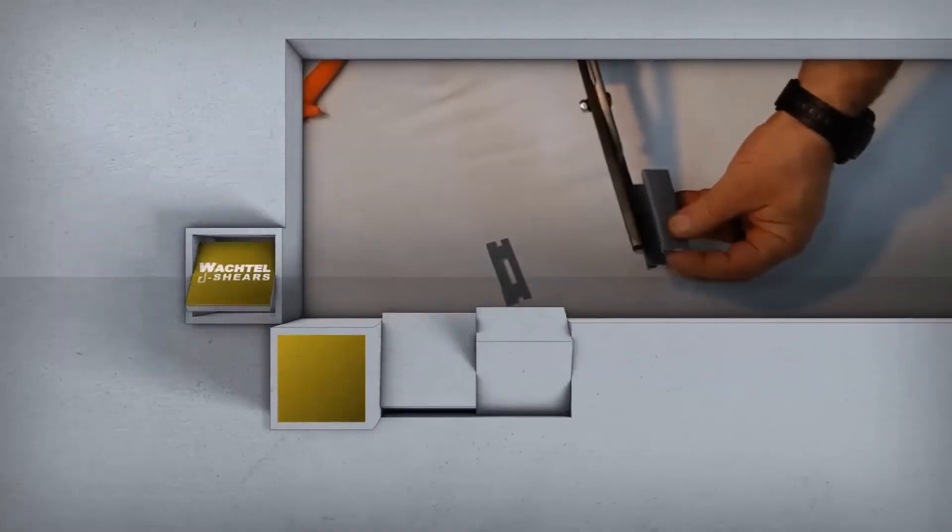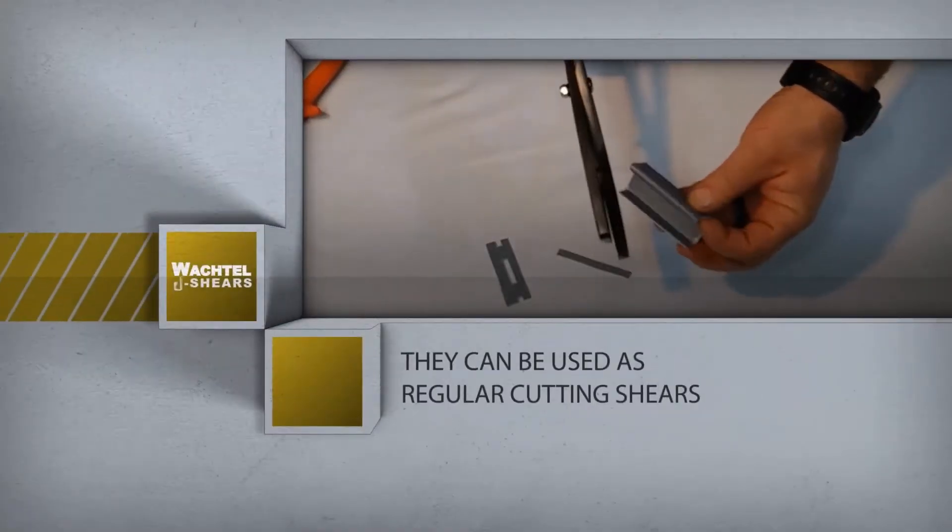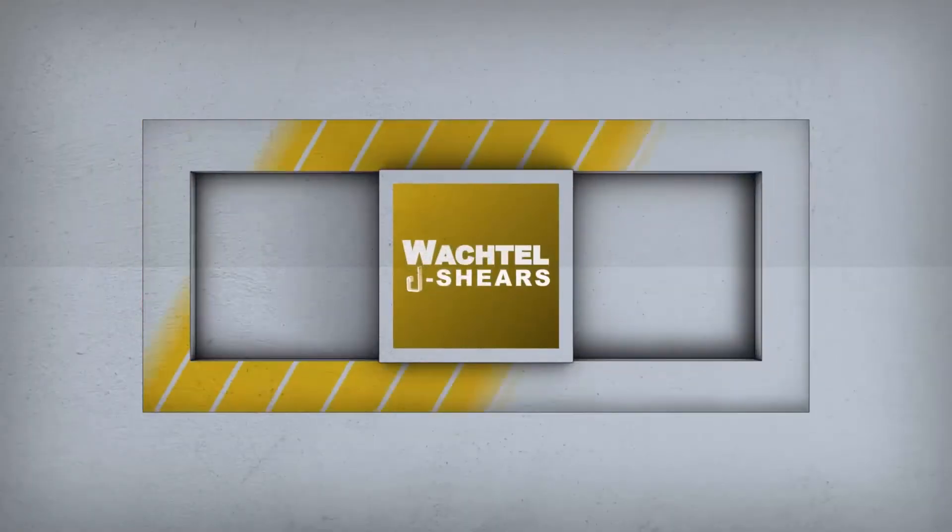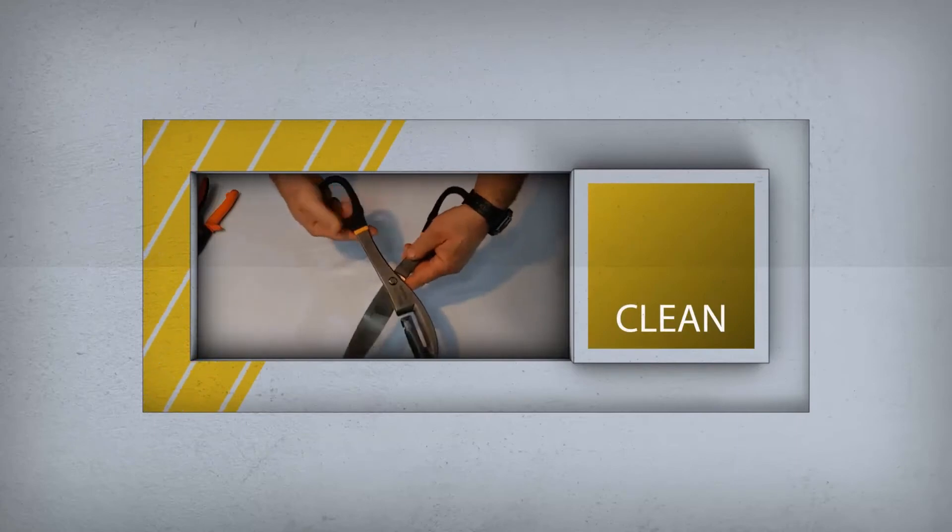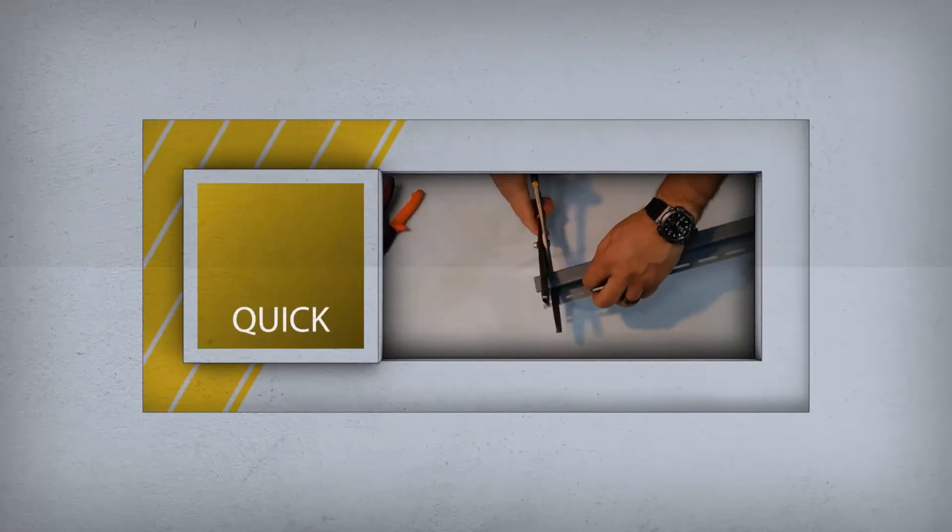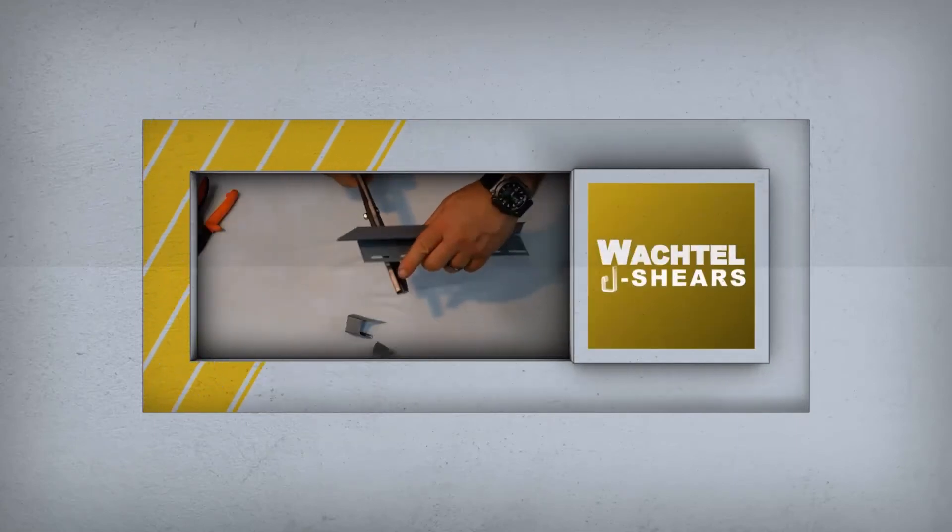Not only can they be used as J-Shears, but they can be used as regular cutting shears. The Wachtel J-Shears. Fast, clean and quick for all your aluminum and vinyl J-Channel cutting needs.